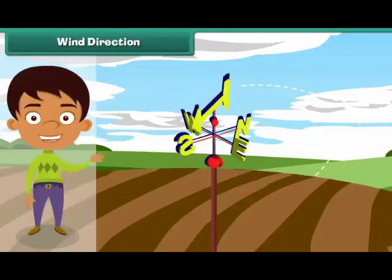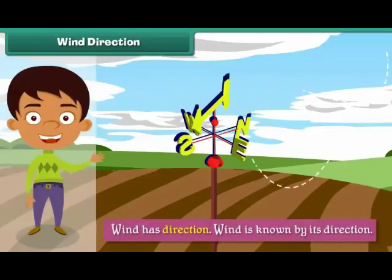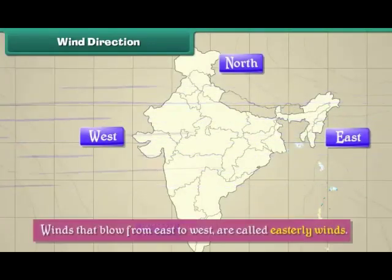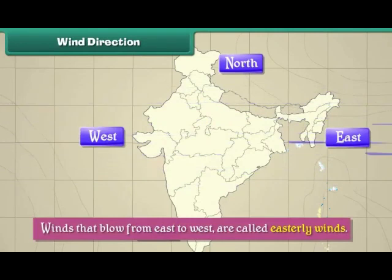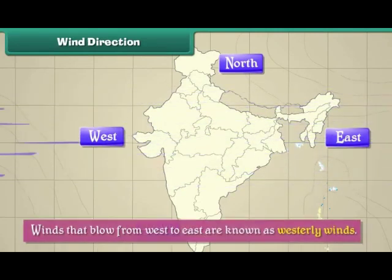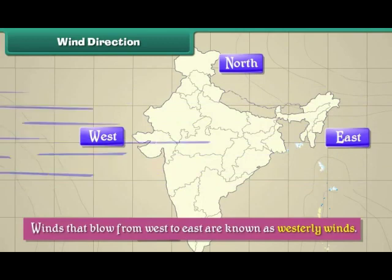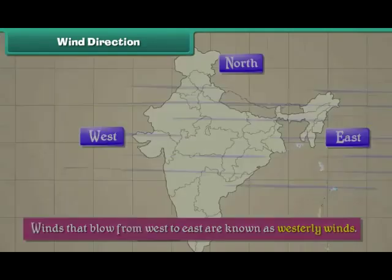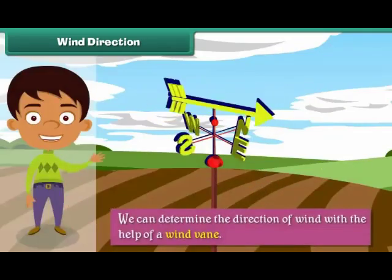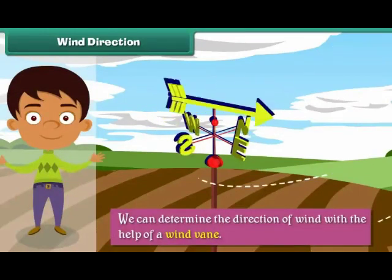Wind has direction and is known by its direction. For example, winds which blow from east to west are called easterly winds. Similarly, winds that blow from west to east are known as westerly winds. We can determine the direction of wind with the help of a wind vane. The arrow of the wind vane indicates the direction from which the wind is blowing.